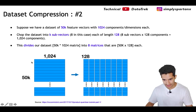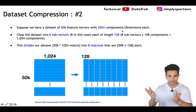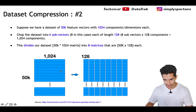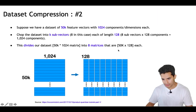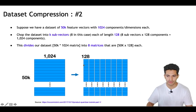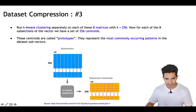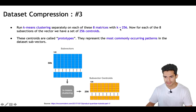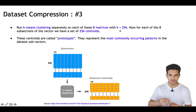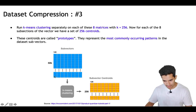Let's look at how it actually works. Suppose we have a dataset of 50K vectors, each of 1024 dimensions. What we do first is chop the dataset into k sub-vectors, dividing the original matrix of 50K × 1024 into eight matrices of 50K × 128, because 128 × 8 = 1024. Next, it runs k-means clustering separately on each of the eight matrices with k = 256.